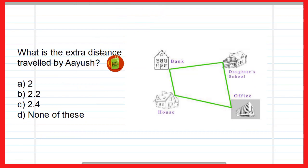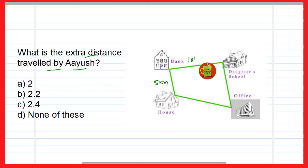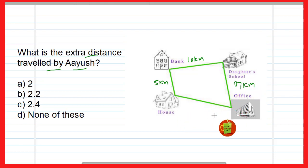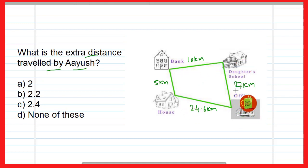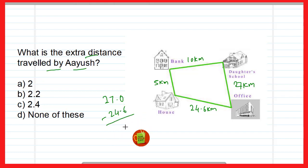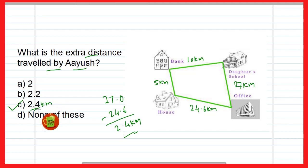Now move to the next question: what is the extra distance traveled by Ayush? The total distance via the indirect route is 27 kilometers, and the direct distance from house to office is 24.6 kilometers. So the extra distance = 27 − 24.6 = 2.4 kilometers. Therefore, the correct option is 2.4 kilometers — that is the extra distance he traveled to reach the office.